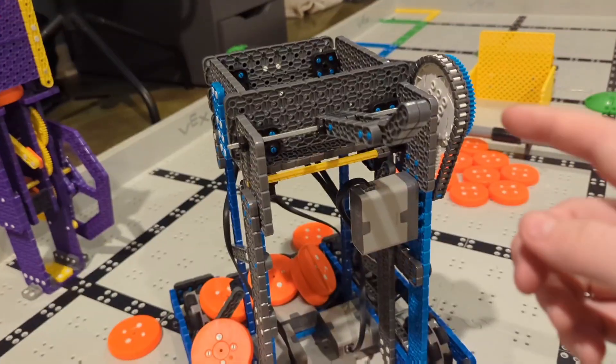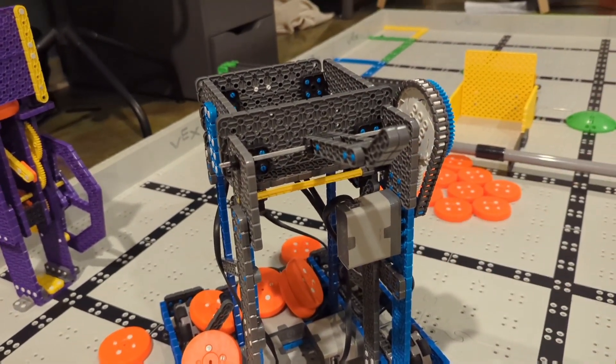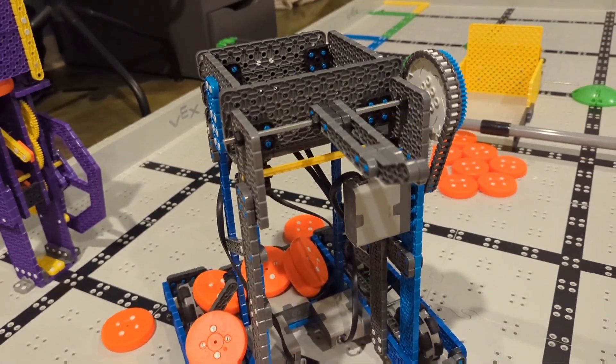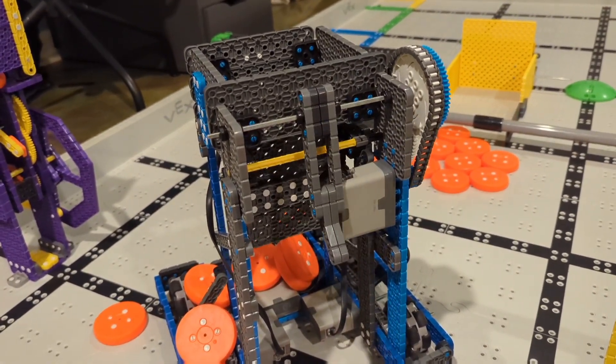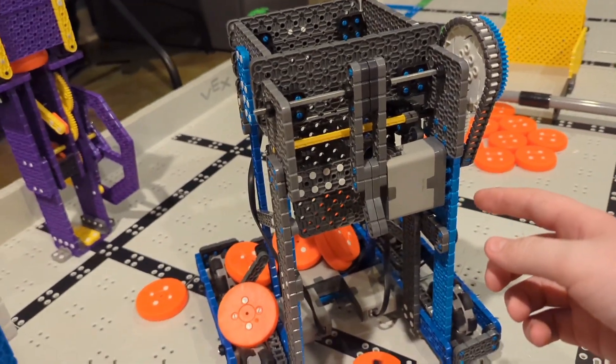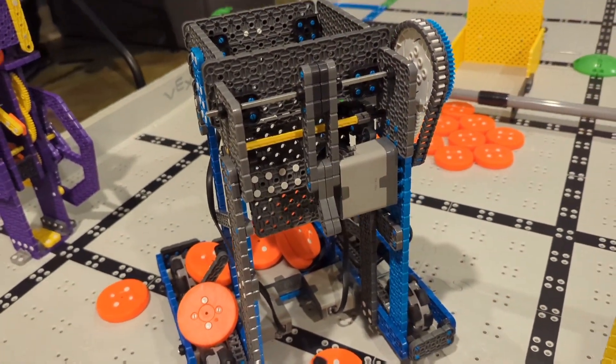That's basically how it works. The main benefit of this type of blue releasing mechanism is that it can go down to take up less space. So this is helpful because then you can have more room on your robot for another mechanism that comes out the front.